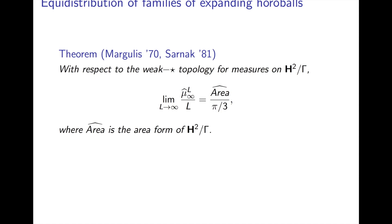An equidistribution statement — which is what we're looking for — would look like the following. This theorem can be deduced from work of Margulis and Sarnak, though what I'm stating here is much weaker than what they prove. In the weak-star topology for measures on the modular curve, these horoball measures, after normalization to be a probability measure (one can compute the total measure is L), equidistribute with respect to the area of the modular curve. The factor π/3 is just the right normalization to get a probability measure. So after making everything a probability measure, we have equidistribution of our horoball measures to the area.